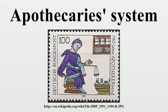In Apothecary's Latin, numbers were generally written in Roman numerals, immediately following the symbol. Since only the units of the apothecary's system were used in this way, this made it clear that the civil weight system was not meant.